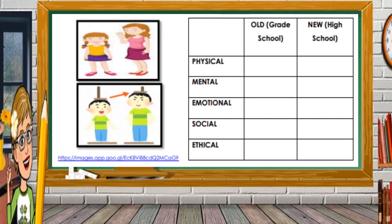There are two boxes provided. On the first box, put your picture from grade school, and on the second box, put your current picture as a Grade 8 student. Compare your old self to your new self — your physical self during grade school days versus your physical self now in Grade 8 — and do the same for your mental self, emotional self, social self, and ethical self.